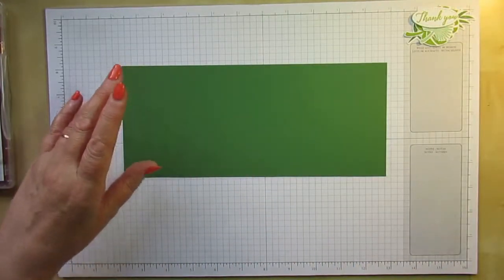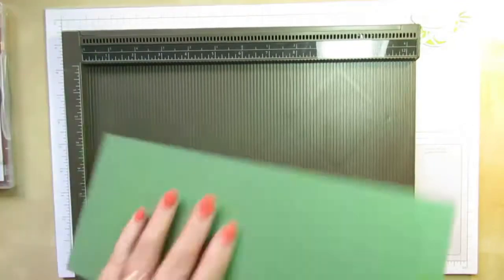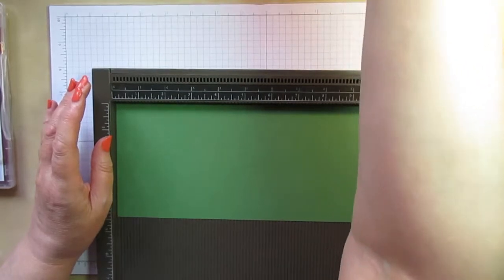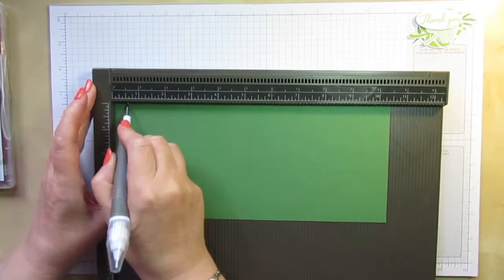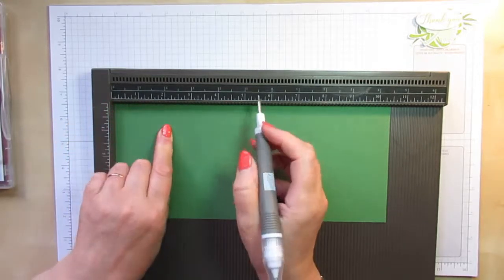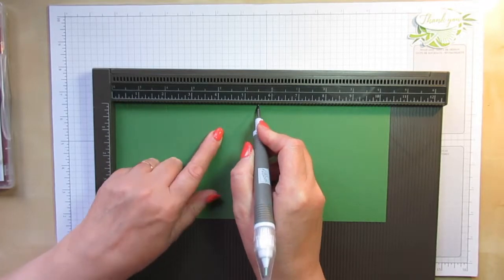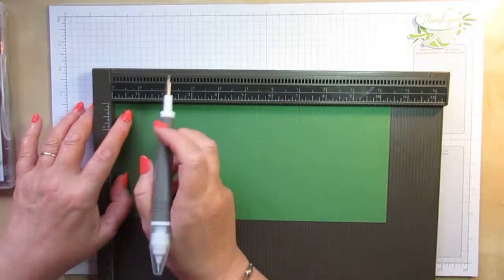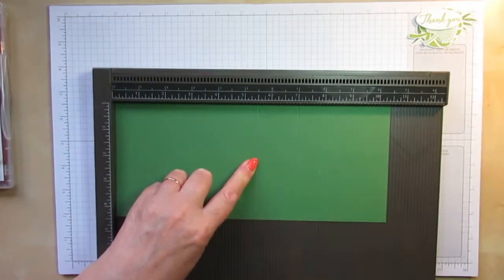So if I bring in my scoreboard, I'll show you how to score it. I'm looking for my take your pick tool, here we are. So you want to score at a half an inch, then at two inches, then at five and a half—I had to think there—and at seven. And before you turn it round, you want to put a little tick mark at one and a quarter inches and at six and a quarter inches.